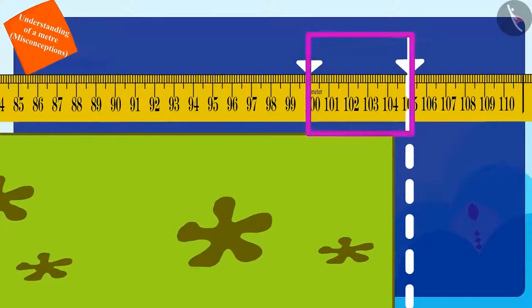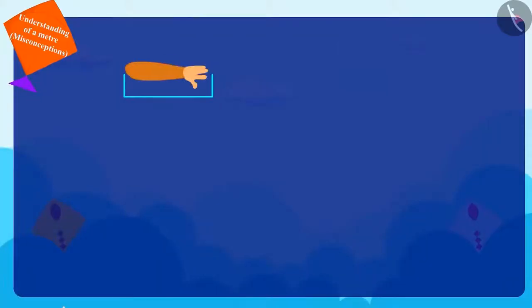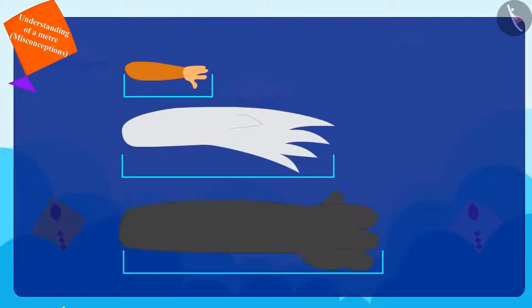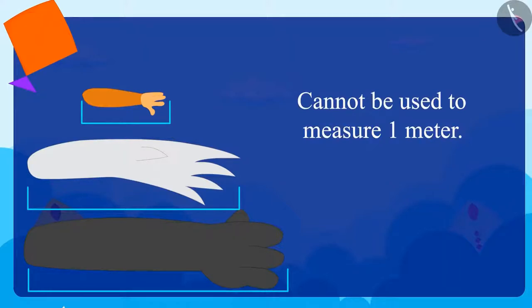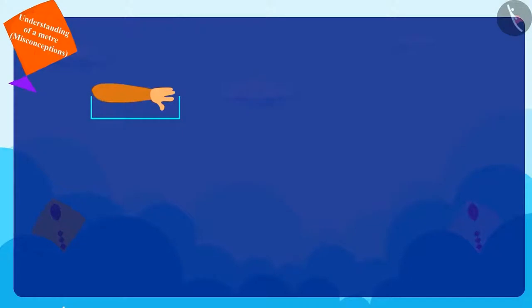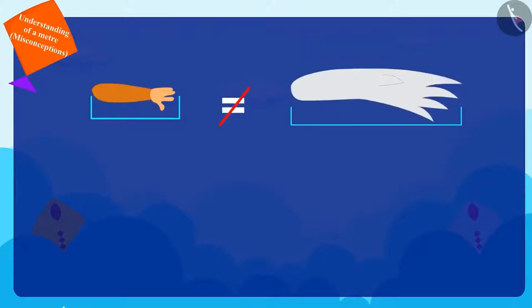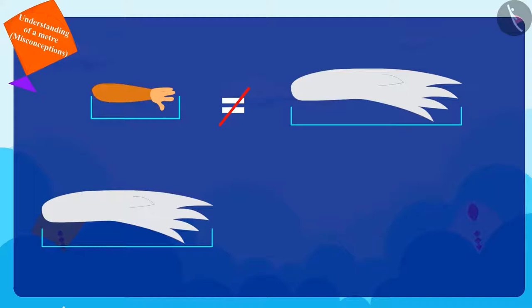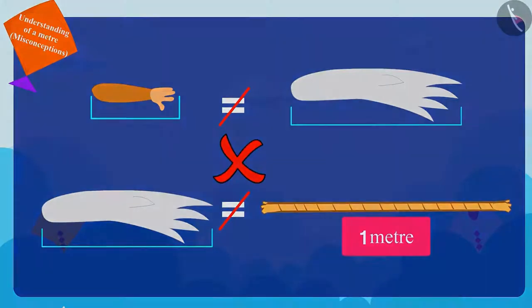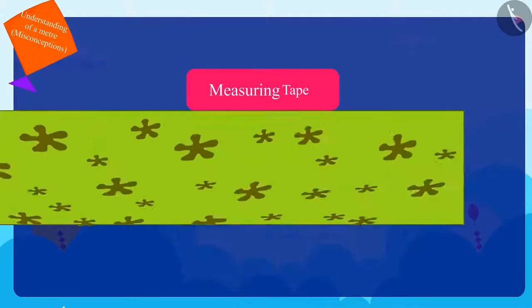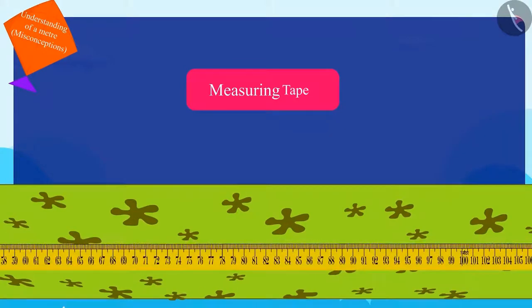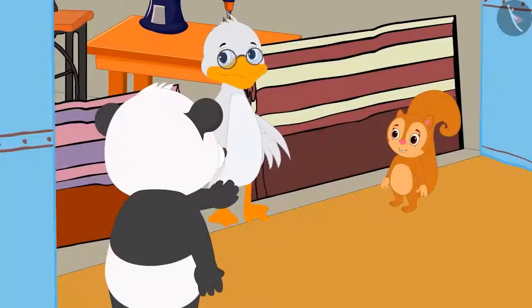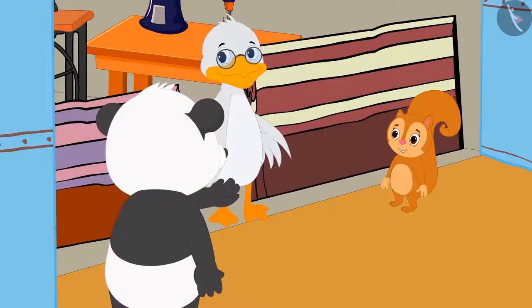Chanda explained to Chacha and Golu that the length of one arm varies for everyone. So, they cannot use it to measure one meter. For example, the length of her one arm is not equal to the length of uncle's one arm, and the length of uncle's one arm is not the same as one meter. She told uncle that he should measure the material using his measuring tape. Both Golu and uncle understood this.